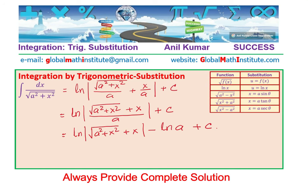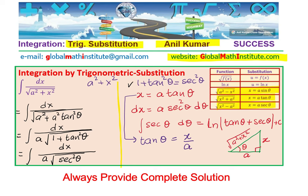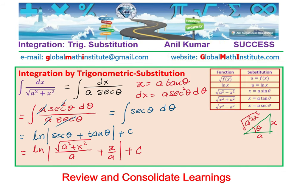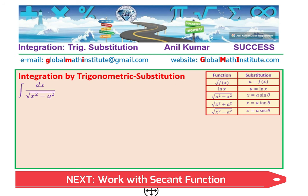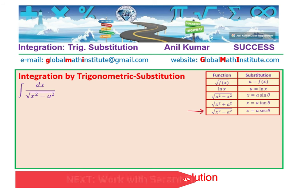To summarize: if you have a² + x² in the denominator, substitute x = a·tan θ. This lets you use the Pythagorean identity 1 + tan²θ = sec²θ to simplify the radical, leading to the integral of secant θ, whose result is a logarithm. In the next video we'll tackle a similar question with x² − a² in the denominator, where the substitution x = a·secant θ is recommended.